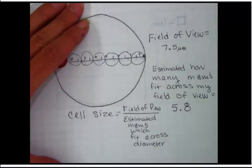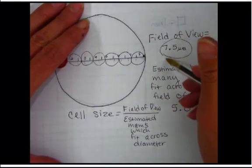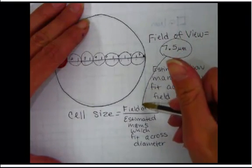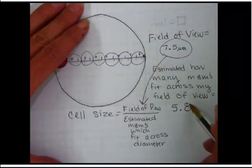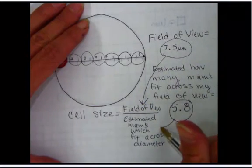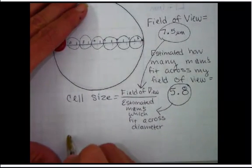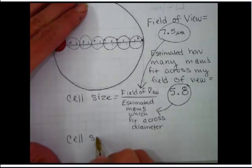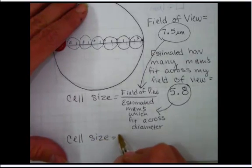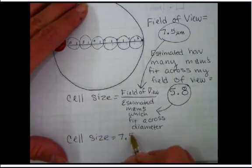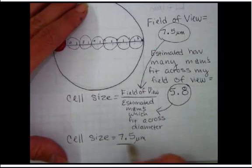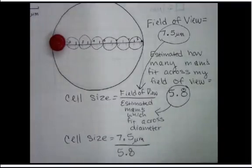So now I'm just going to use my numbers. I'm going to take my field of view and put it into the equation. And I'm going to take my estimated M&Ms and put it into the equation. So now cell size is really 7.5 microns divided by 5.8 M&Ms, which fit across. So I'm going to use my calculator.